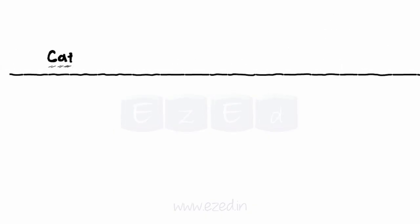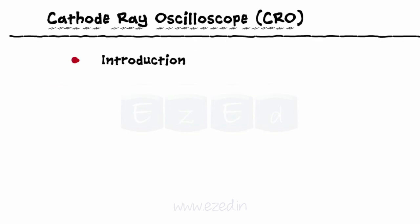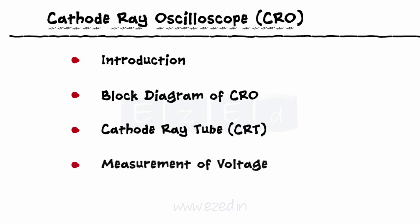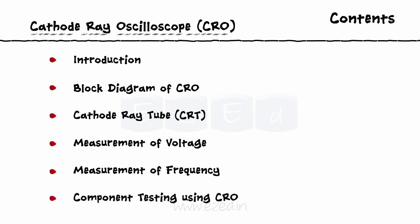In this Easy Ed video lecture, we will learn about cathode ray oscilloscope, wherein we will see the introduction, block diagram of a CRO, cathode ray tube or CRT, measurement of voltage and frequency, and lastly, the component testing using a CRO. Let's start with the introduction.